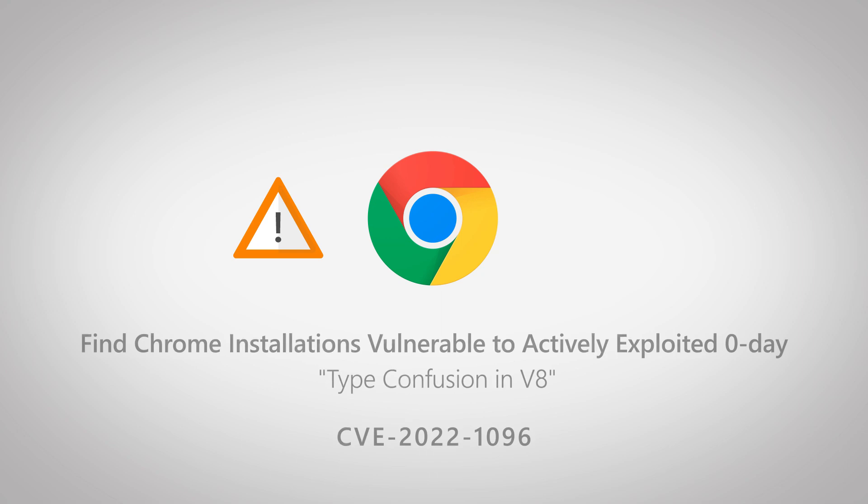Hello and welcome to this new vulnerability video. Over the weekend, Google released a new Chrome 99 version targeting a specific vulnerability that has been disclosed only a few days before Chrome 100 is due to release. This new vulnerability is listed as a type confusion in the V8 JavaScript engine used by Chrome, and they have also mentioned that it is being actively exploited.